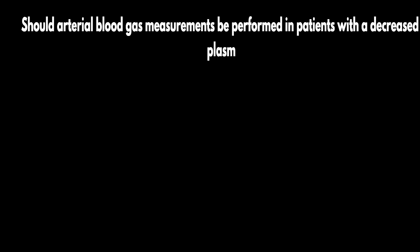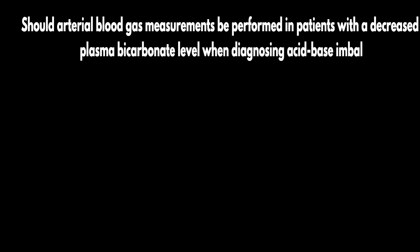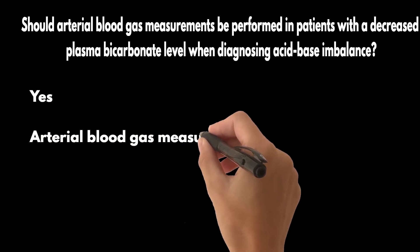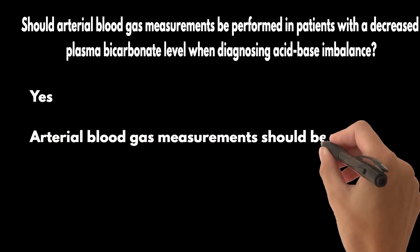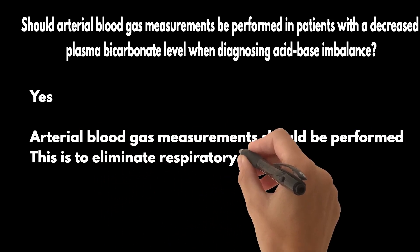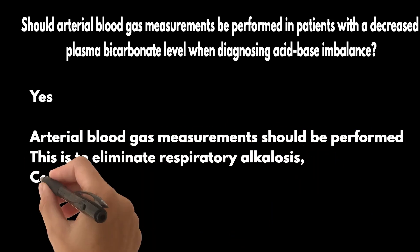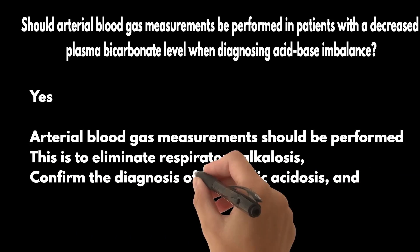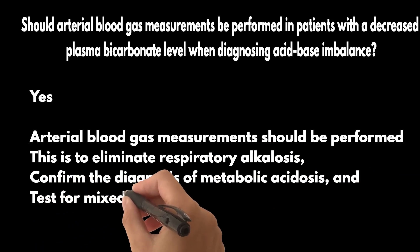Should arterial blood gas measurements be performed in patients with a decreased plasma bicarbonate level when diagnosing acid-base imbalance? Yes. Arterial blood gas measurements should be performed to eliminate respiratory alkalosis, confirm the diagnosis of metabolic acidosis, and test for mixed acidosis.